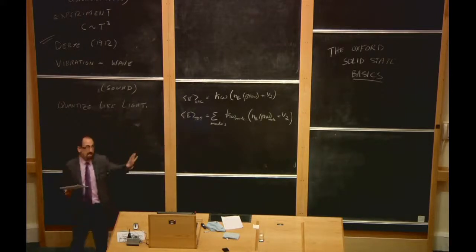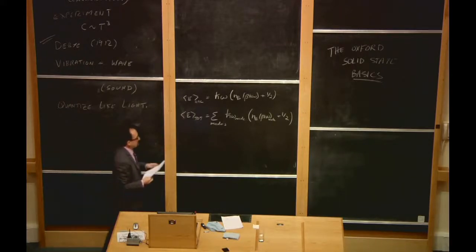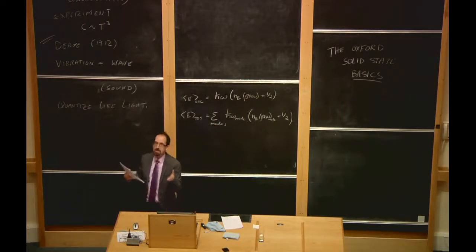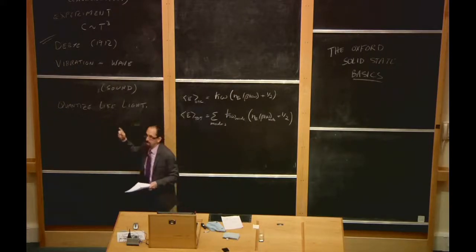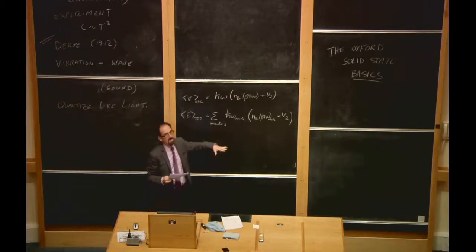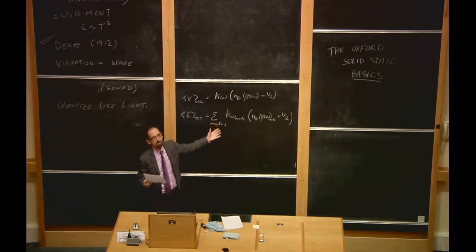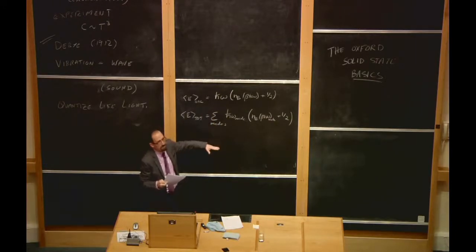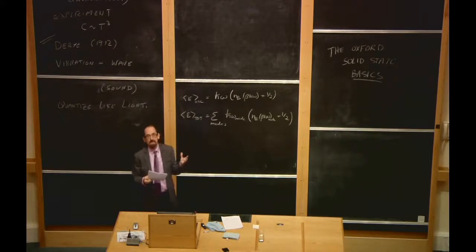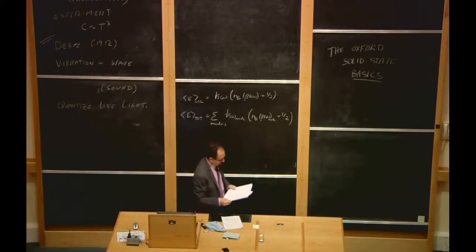The reason this gives something different from Einstein is that in a box there are low-frequency modes. In Einstein's calculation, when the temperature dropped below the oscillator frequency, the heat capacity dropped. But here we have a whole distribution of frequencies, so as we lower the temperature, there will always be some modes of low enough frequency that still have some heat capacity. So the heat capacity won't drop exponentially. That's the intuition.